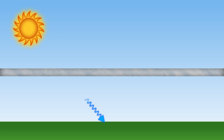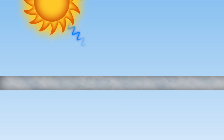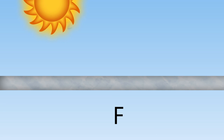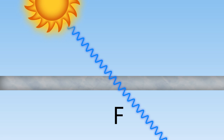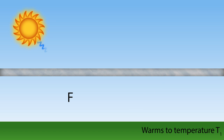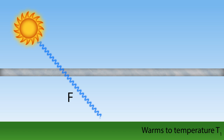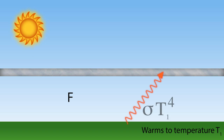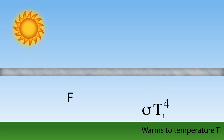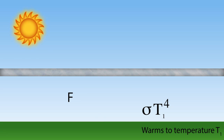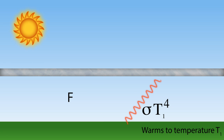We've got the same radiation F coming down to the Earth. We don't know how much it heats the surface temperature up yet, so let's give it a different name — if it heats it up to some temperature T1. So the radiation the surface gives out gets bounced back up and heats up this layer of gas in the atmosphere.